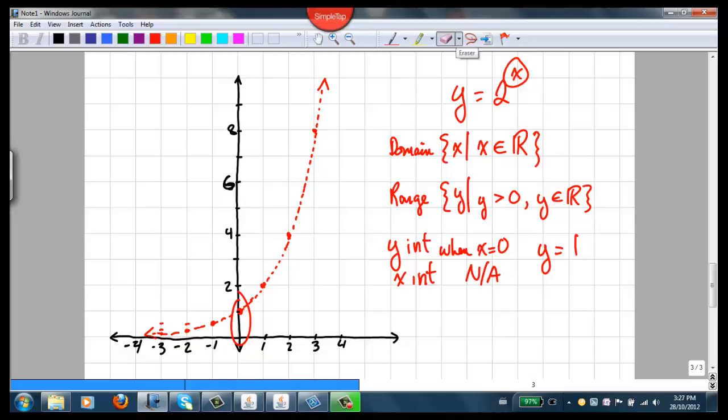Now we can take a look at some other functions too. Other exponential functions and just see what happens. So let's say that we get rid of this y equals 2 to the x. And we make it y equals 3 to the x. Let's see what happens. When 3 is raised to the power of 0, we get 1. When y equals 3 to the 1, we get 3, and when y equals 3 squared, we get 9.